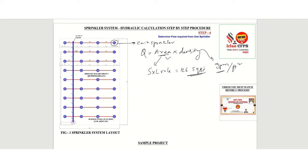If you know area and density, then we can determine the total amount of water that must come from one sprinkler during a fire event.